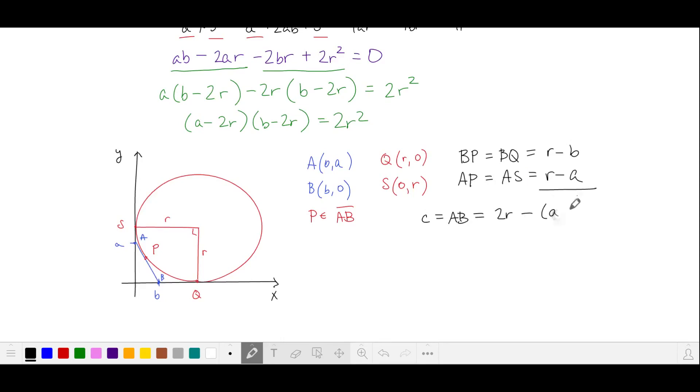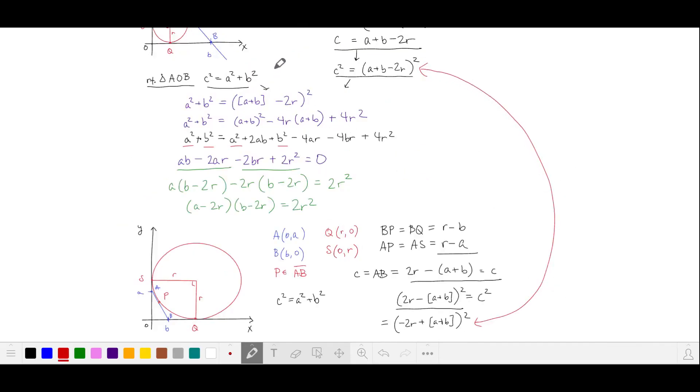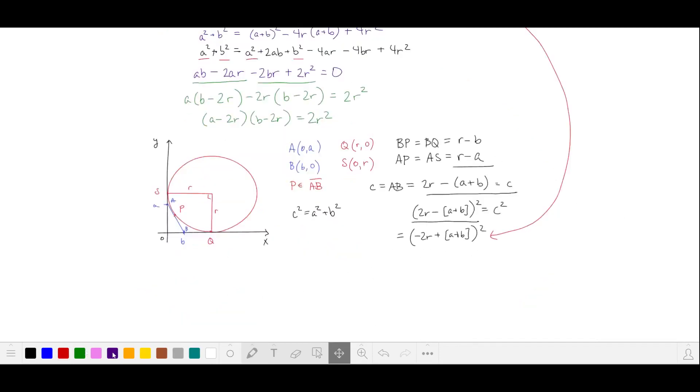That's 2R minus A minus B. Again, we can apply the Pythagorean theorem to triangle AOB. When we square this equation, we get this expression on the left-hand side. This is the same as the square of its negative, which is what we happen to have when we considered tangent segments that were above the circle. So when we square this out, we're going to get the same equation.